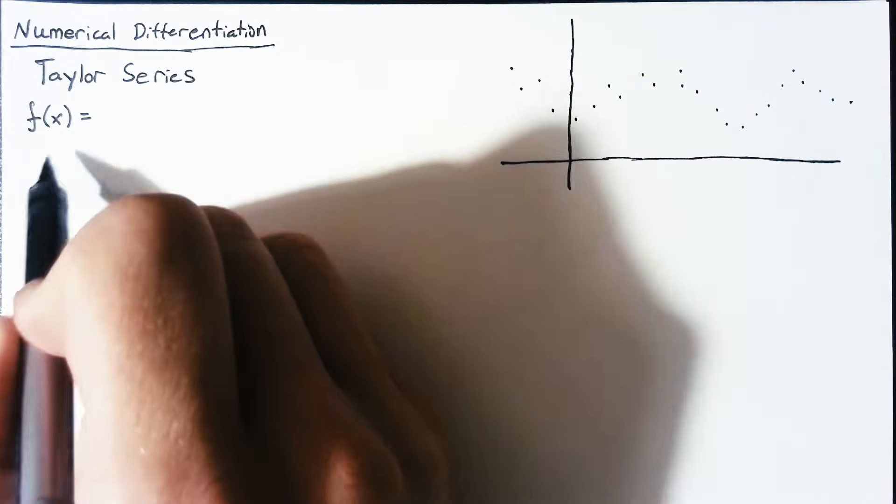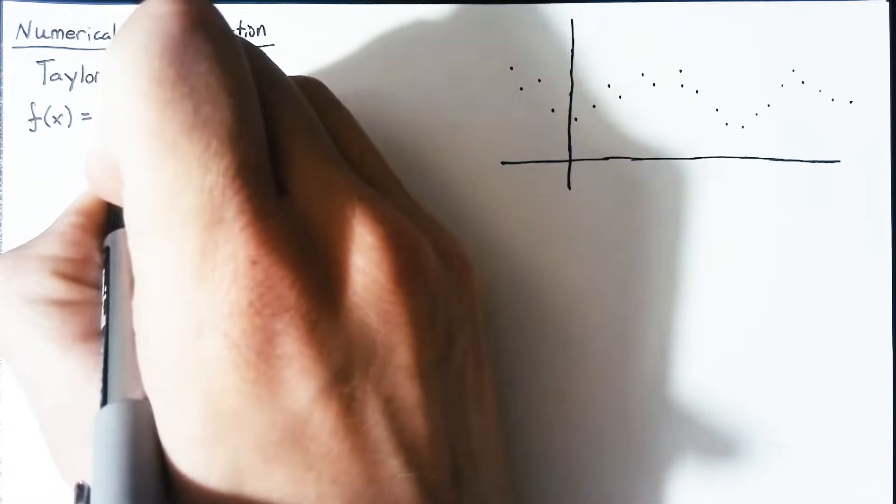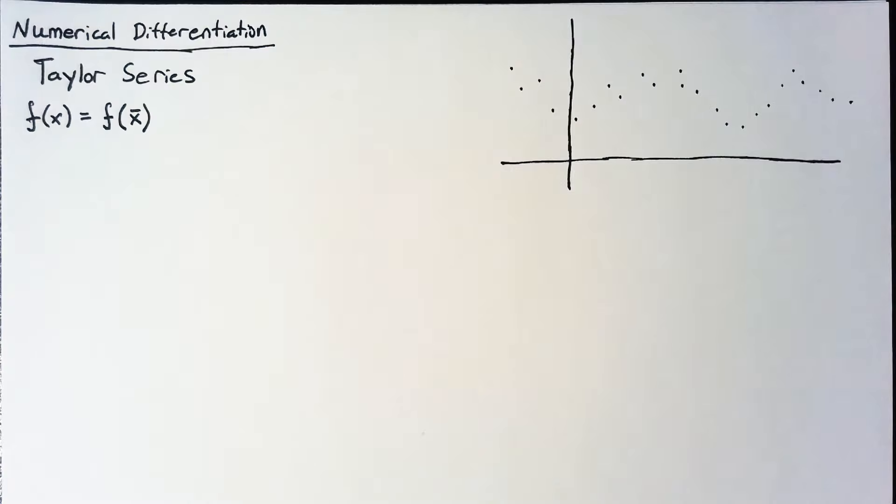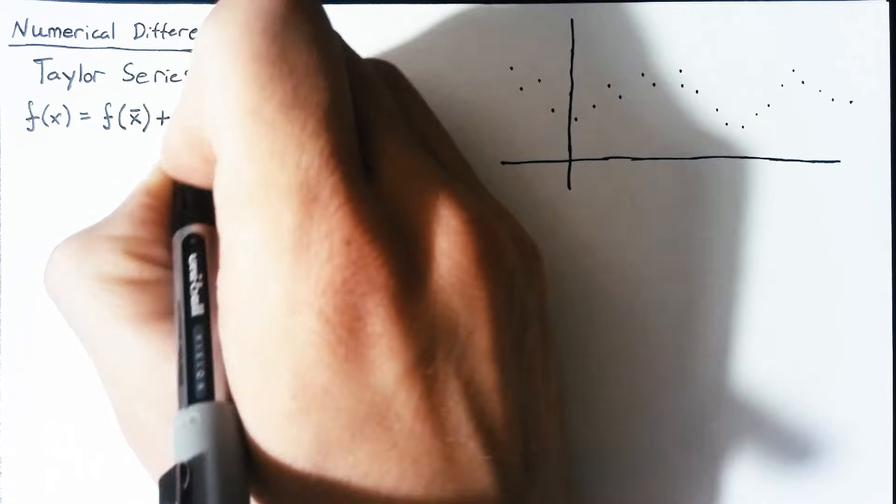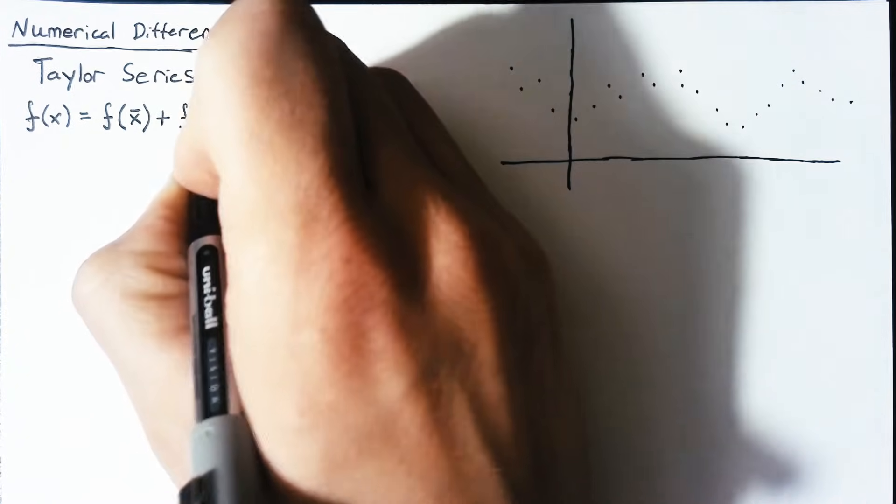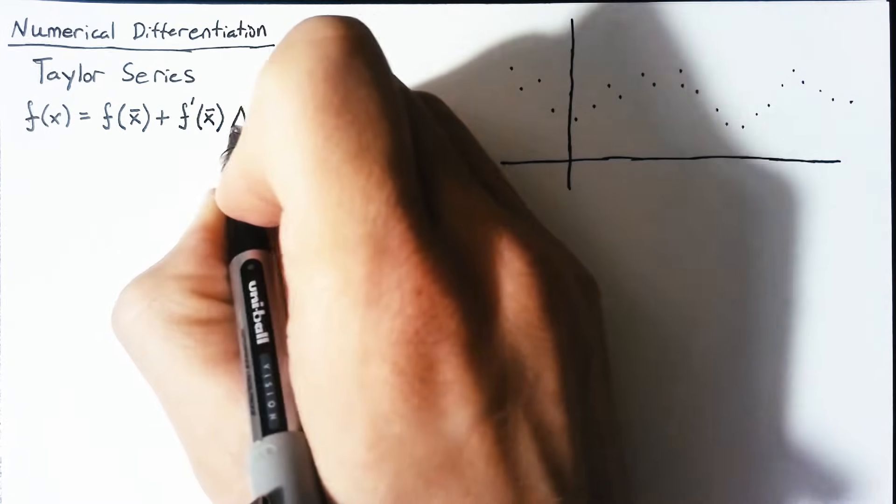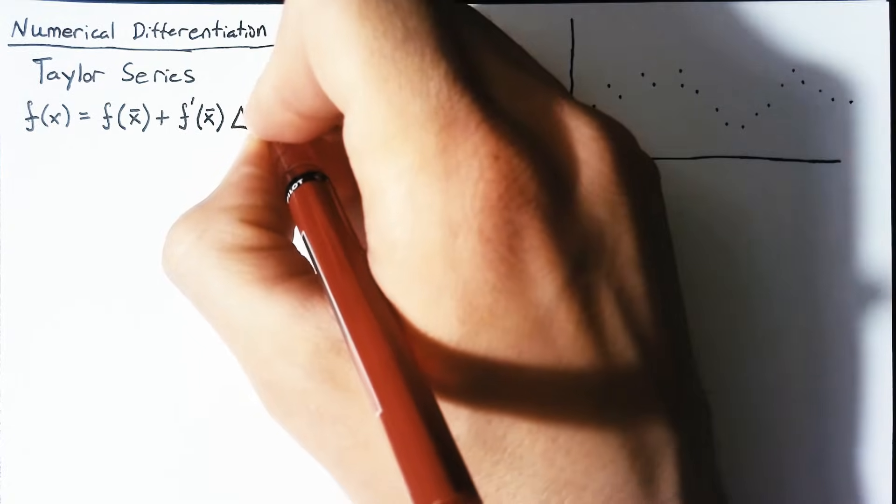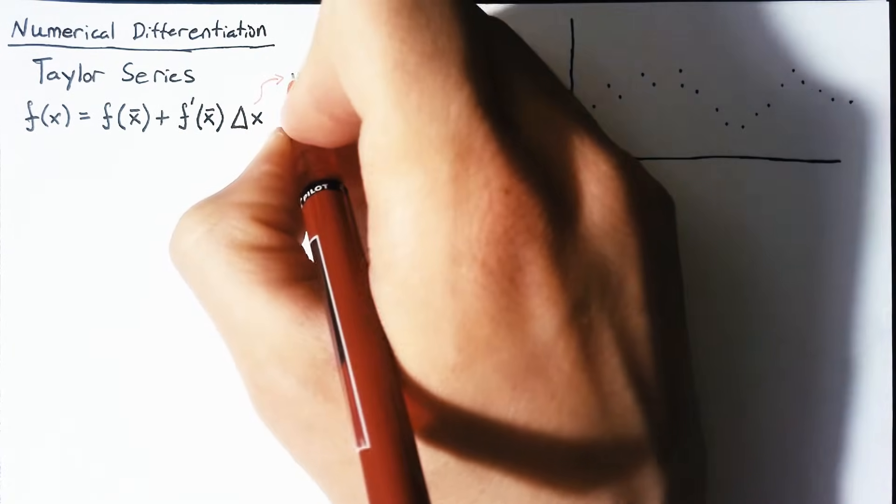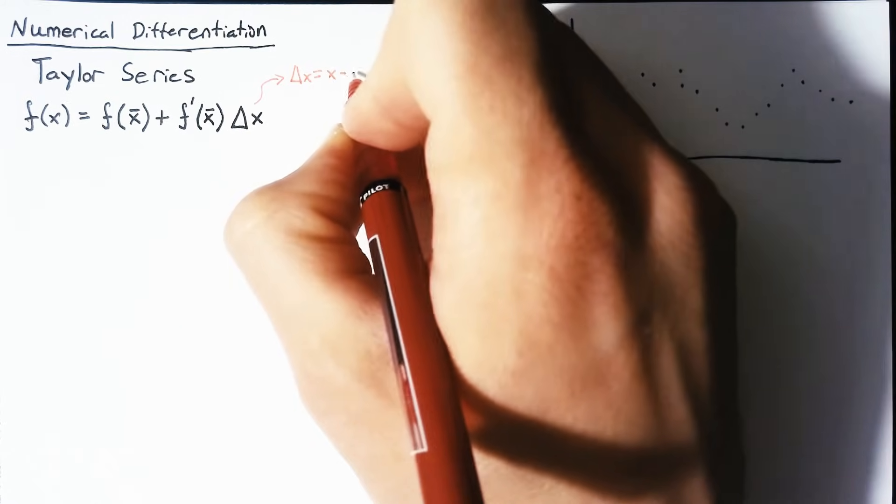is going to be equal to the function at another point, I'm going to name that x bar, and that's going to be related to the derivative of a function, again evaluated at that second point x bar, multiplied by delta x, and that delta x is just the difference in space between the two points. So delta x is equal to x minus x bar.